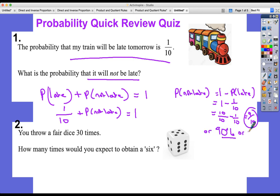Other possible answers you might have given there are 90% or 0.9. Hopefully that's nice and straightforward. The second one: you throw a fair dice 30 times. It's the number of trials. How many times would you expect to get a six, to obtain a six?